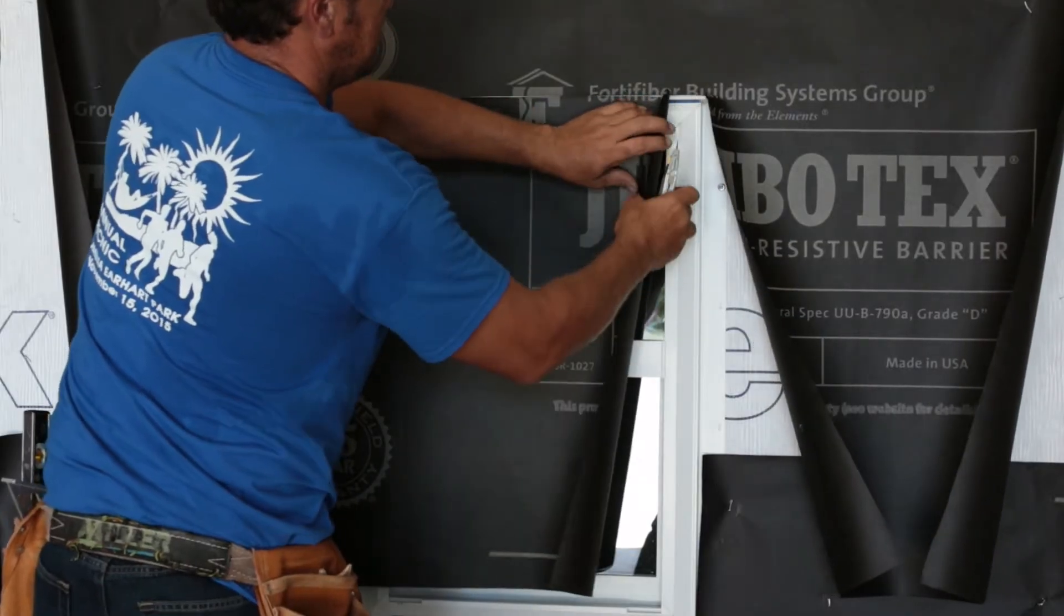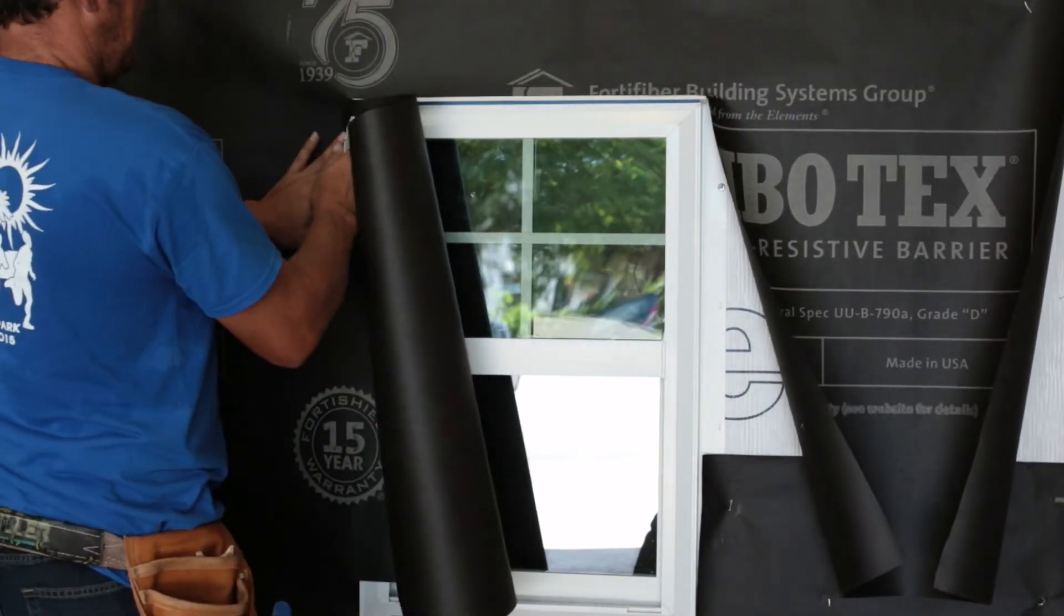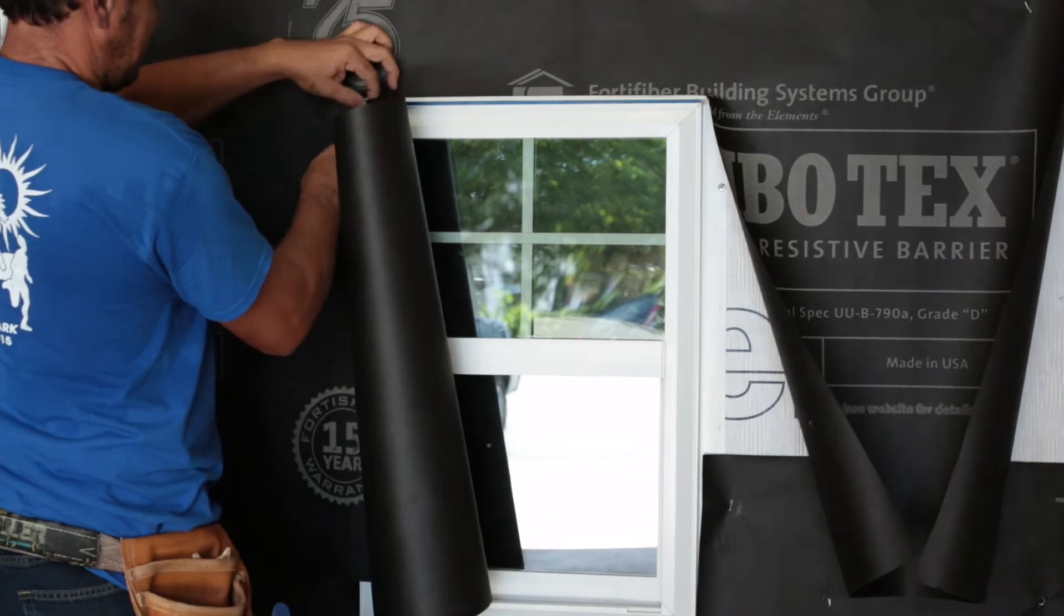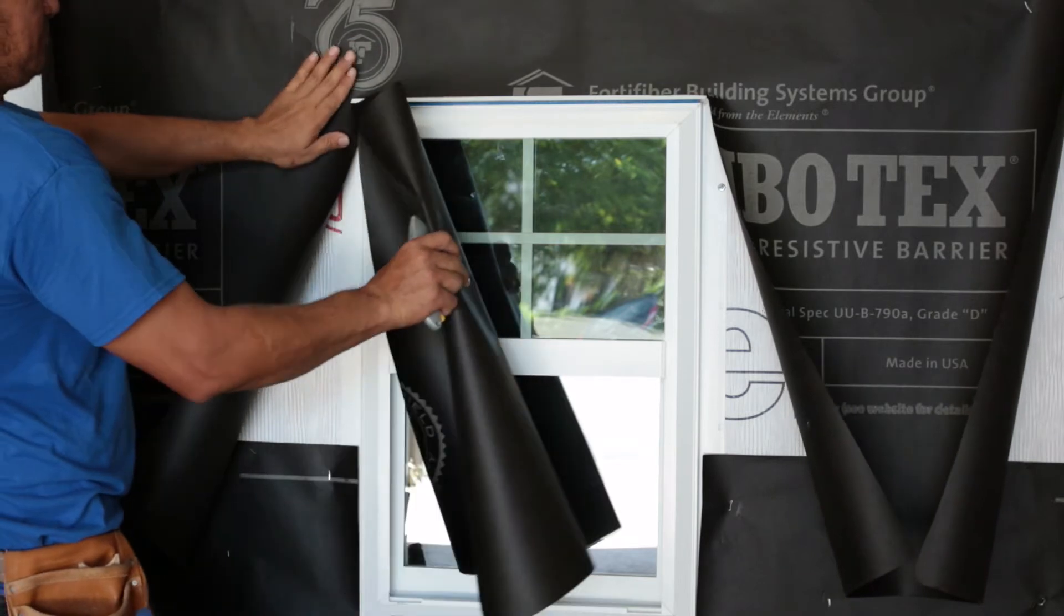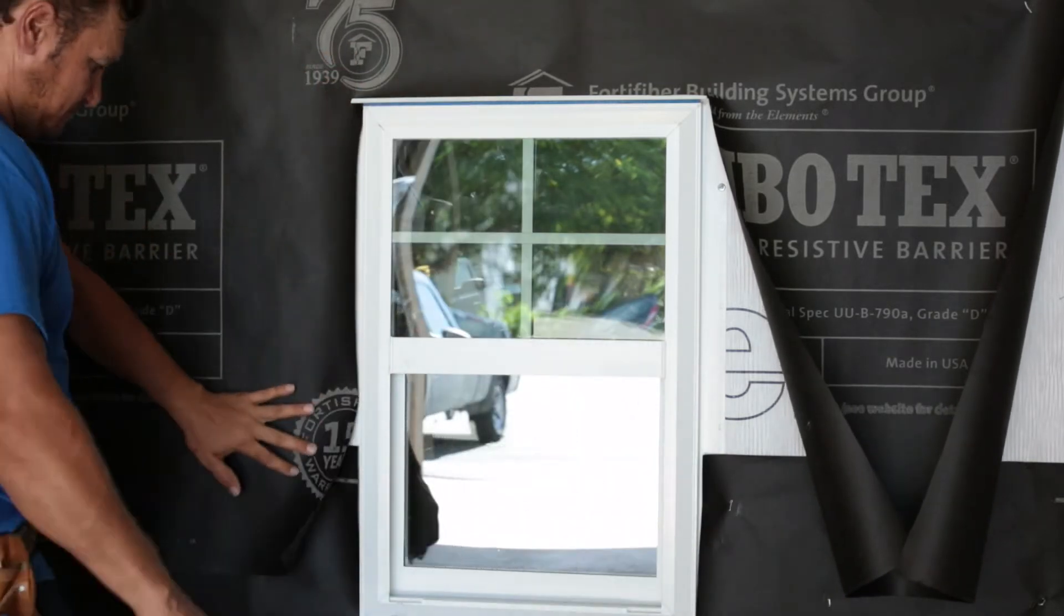Here the installer is applying the weather-resistive barrier which is cut using the window as a template. Once cut, the weather-resistive barrier is then attached to the wall surrounding the window.